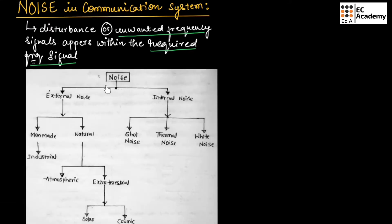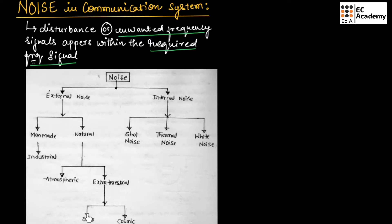This figure shows the classification of noise. We can classify noise broadly into two types: external noise and internal noise. External noise can be classified as man-made noise or natural noise. Man-made noise includes industrial noise. Natural noise can be classified as atmospheric noise or extraterrestrial noise, which further includes solar noise or cosmic noise.